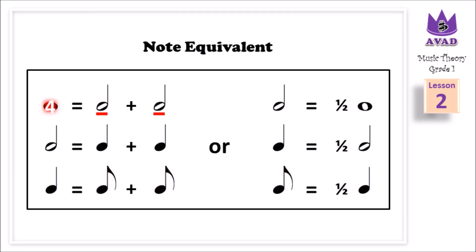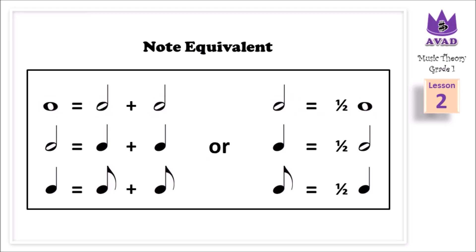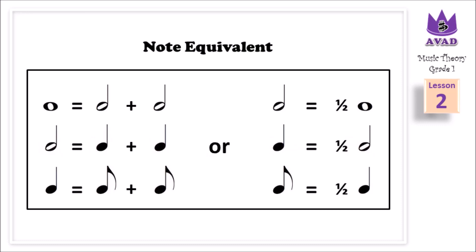If a semibreve represents 4 beats, then each minim represents 2 beats. Or, 2 is half of 4. A 2-beat minim equals 1 crotchet plus 1 crotchet beat. Or, 1 is half of 2. A 1-beat crotchet equals half plus half beats.